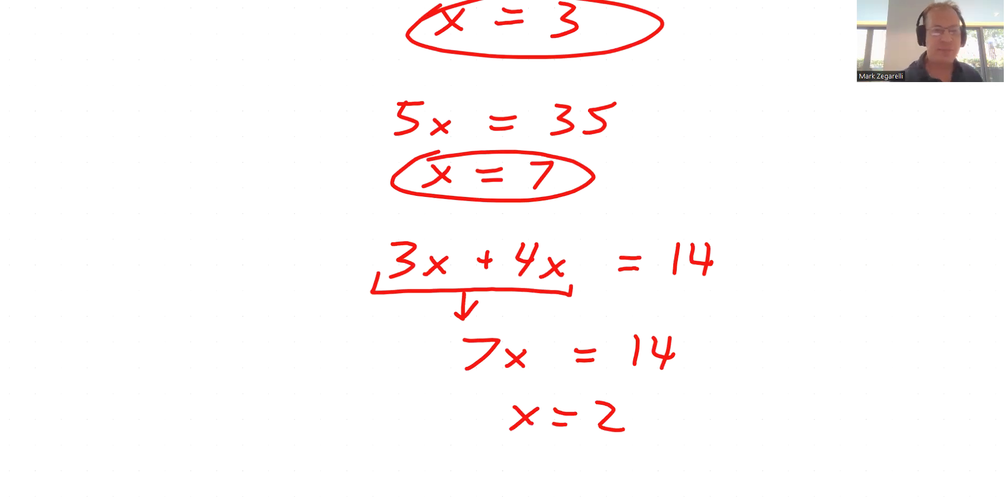You could have done it at the beginning. I mean, I'll circle back and say, you could have said 3 times 2 plus 4 times 2 - what does that equal? 6 plus 8. Yeah, 6 plus 8 does equal 14.